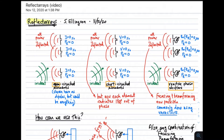Hi, and welcome to a lecture on reflect arrays. The three diagrams I'm showing here are intended to demonstrate the concept of a reflect array. Let's begin with the one on the left. Here we have three antennas, which I'm showing as dipoles, but these could be any antennas. All that matters is that they have terminals, and we can access those terminals and consider the voltage and current at those terminals. We have an incident wave on this array, and each antenna is open-circuited.